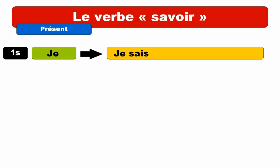Repeat. JE SAIS. You can see that we've got a final S but as usual we don't pronounce it. JE SAIS. Second form — TU SAIS. Actually the same form. TU SAIS. Repeat.